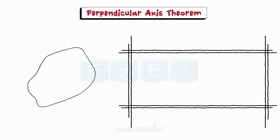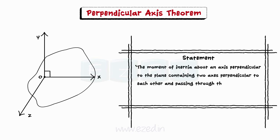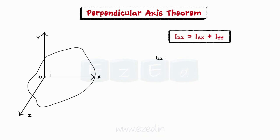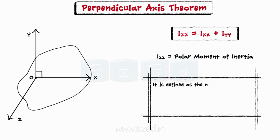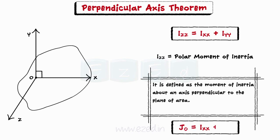Perpendicular axis theorem: it states that the moment of inertia about an axis perpendicular to the plane containing two axes perpendicular to each other and passing through their point of intersection is equal to the sum of moment of inertia of the two axes. Mathematically, Izz equals Ixx plus Iyy. Izz is also known as polar moment of inertia. It is defined as the moment of inertia about an axis perpendicular to the plane of area and is represented as J₀. Therefore, J₀ equals Ixx plus Iyy.